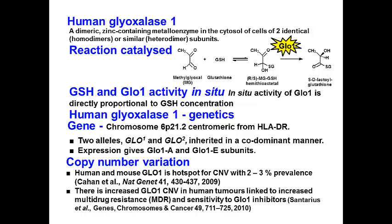Great interest in glyoxalase 1 genetics has recently emerged because we now know that there's a hot spot for copy number variation of the glyoxalase 1 genetic locus in the human and mouse genome. The prevalence is thought to be about 2–3%. There is also increased copy number variation of glyoxalase 1 in human tumors — overall about 8%, but higher in tumors of the breast and lung, which confers multidrug resistance.